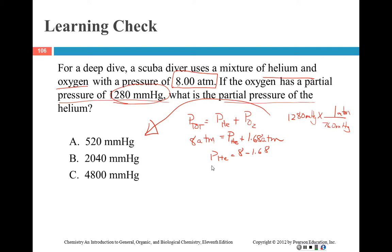My partial pressure of helium is 6.32 atmospheres, so I just have to convert it back. 760 millimeters of mercury over 1 atmosphere—see what I'm saying? If I'd looked to see what the units of my answer was, I could have saved myself a bunch of trouble. That's all right, there's always a way to get back.